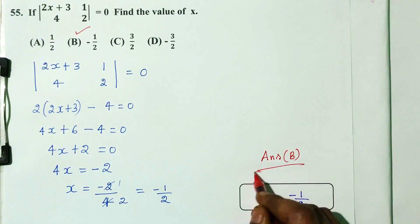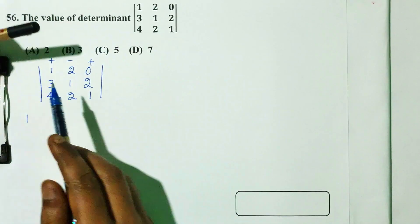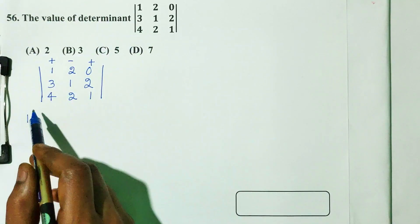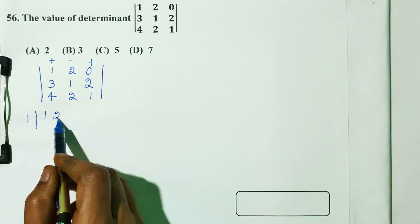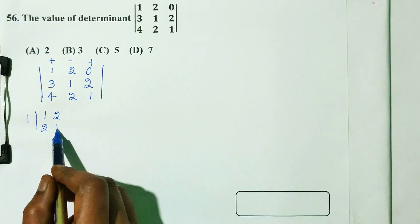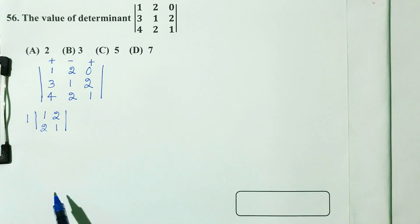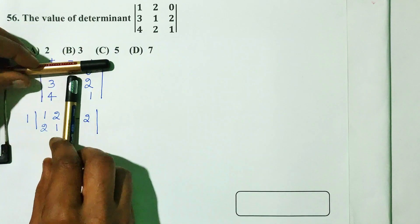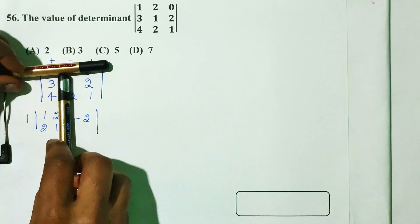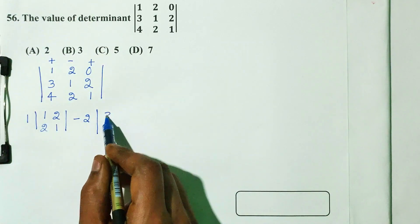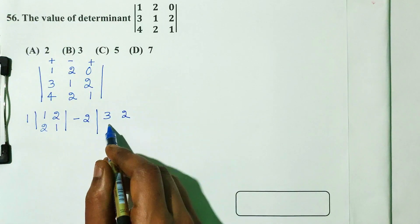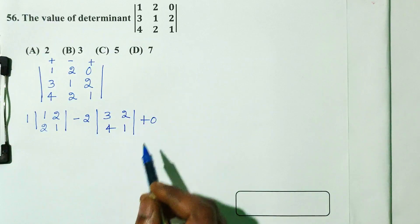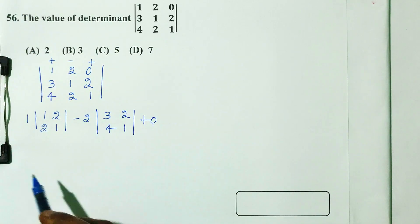Next, we have another problem. We identify row and column elements. The elements are 1, 2 and 2, 1 for one sub-matrix, and 3, 2, 4, 1 for another. We also note the elements plus 0 for the third component.